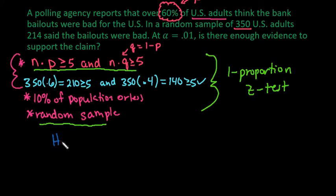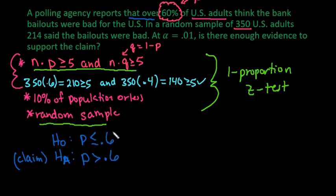Remember that the null hypothesis always has to have equality. The alternative always has to have inequality. So when you read through this, it's saying the polling agent reports that over 60%. Over means that it does not include. So I would say that P is greater than 0.6. Like I said, for a one proportion z test, you always use P and H sub 0 and H sub A. So this is our claim. So we're going to see if we have enough evidence to support this claim.